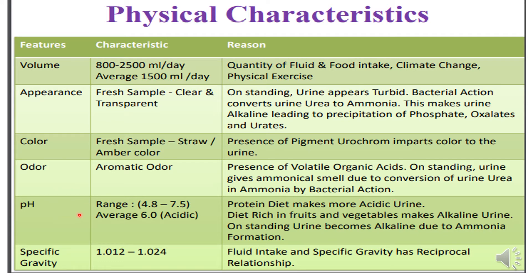The pH of urine ranges from acidic to alkaline. On an average, pH is around 6, which is mildly acidic. The reason for the acidic pH is the protein diet, which makes the urine acidic. Diets rich in fruits and vegetables make it alkaline. On standing, urine becomes alkaline due to ammonia formation. Urine also becomes alkaline after meals.